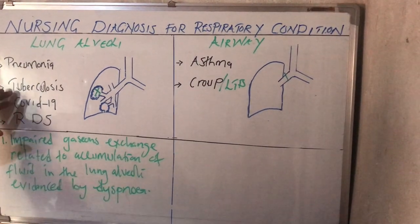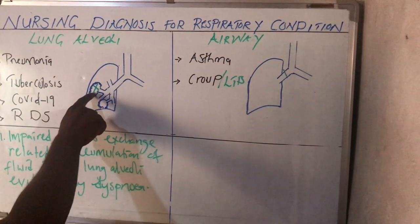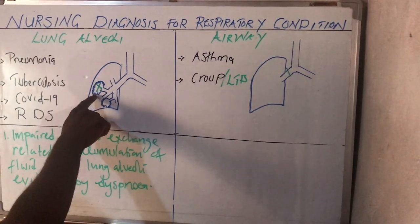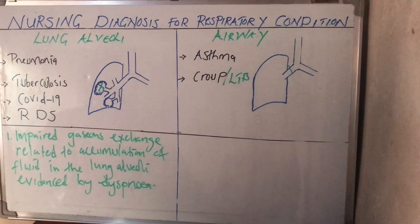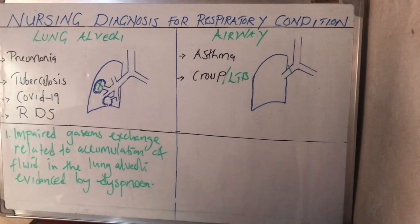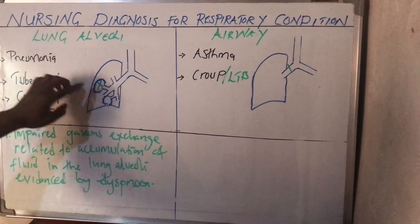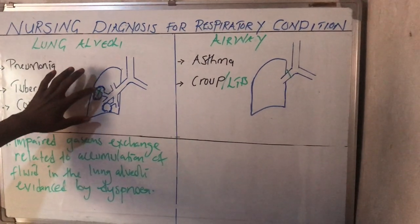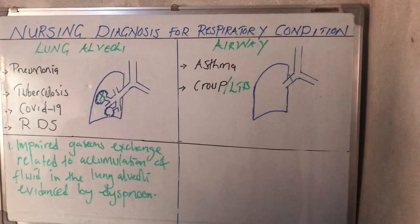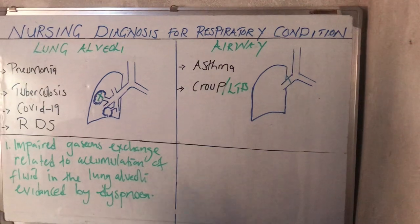Initially, we're not supposed to have fluid inside the alveoli, but in all these conditions, there will be fluid inside the lung alveoli, which is going to make gaseous exchange to be impaired. So that is the number one nursing diagnosis that this patient will have.